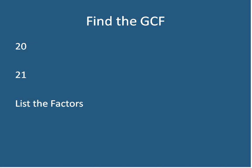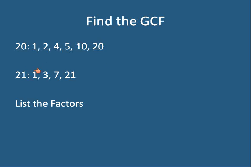Let's find the greatest common factor of 20 and 21. We list all the factors. The factors of 20 are 1, 2, 4, 5, 10, and 20. The factors of 21 are 1, 3, 7, and 21. They don't have anything in common. Both of these numbers are composite numbers, but they don't have any common factors.